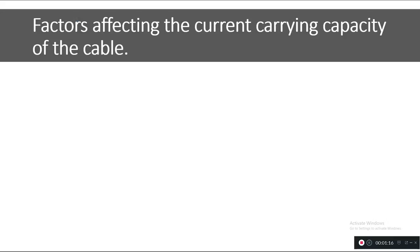Before starting with the calculation, I would like to tell you about the factors which affect the current carrying capacity of a cable. The first factor is temperature. The ambient temperature affects the current carrying capacity. For example, if the temperature is more than 35°C, the capacity decreases, whereas if it is less than 25°C, the capacity increases. We need to refer to the cable manufacturer's datasheet to get the correction factor for our operating temperature conditions at the site.